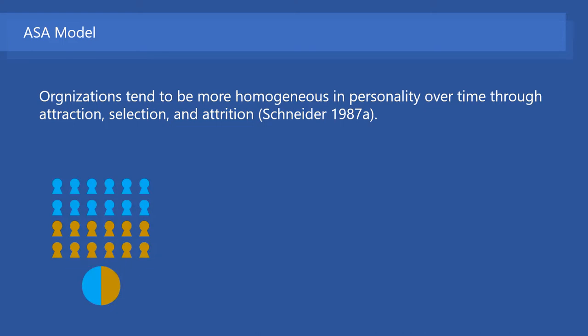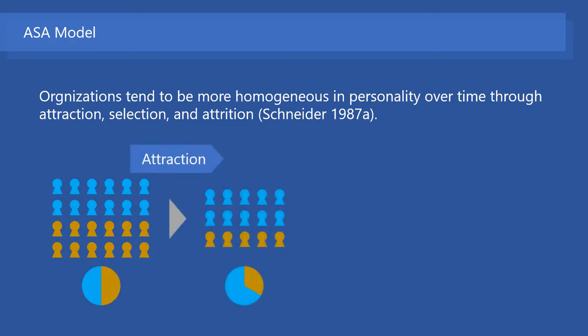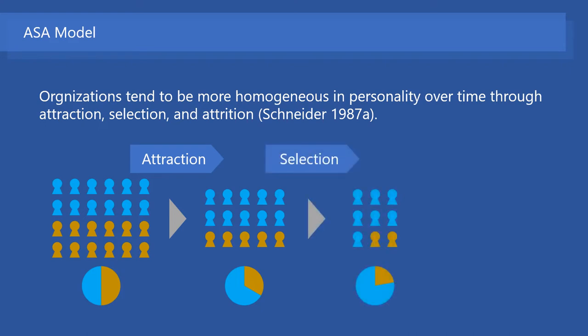First, in the attraction process, people who share important attributes with a particular organization are likely to be attracted to the organization. People who are attracted tend to apply for the organization. Then, in the selection process, people who share important attributes with the organization are likely to be selected and become organizational members. In the attrition process, members who do not fit the organization are likely to leave. Through these processes, an organization becomes homogeneous — that is, it consists of almost only a particular kind of people.